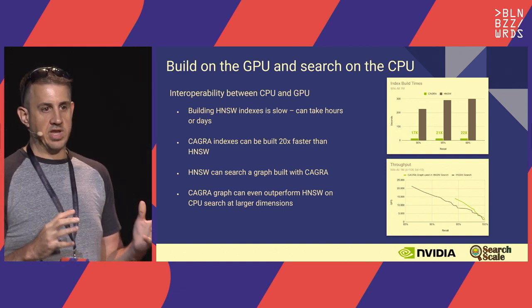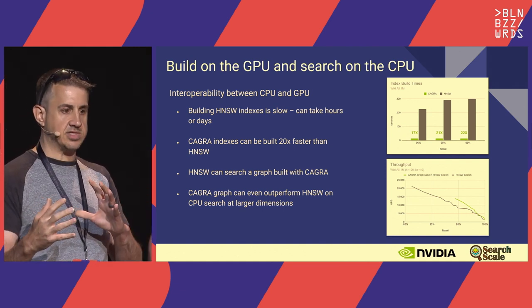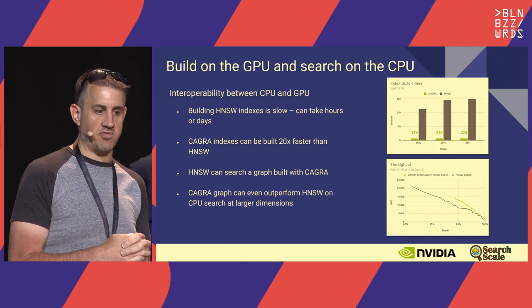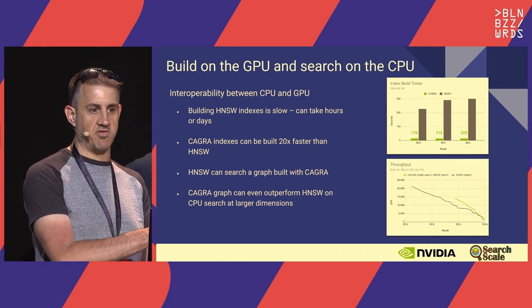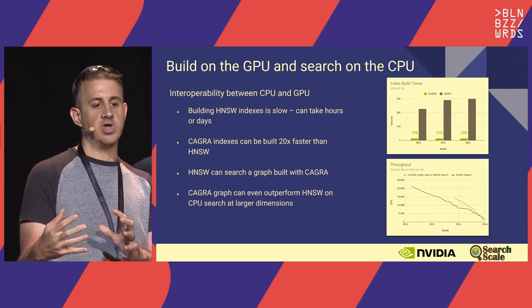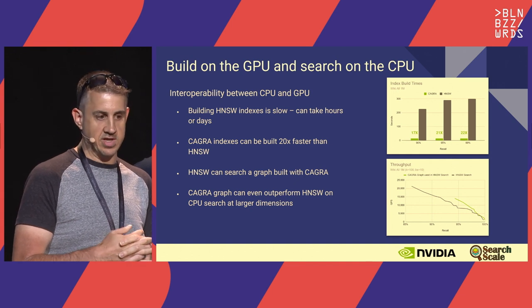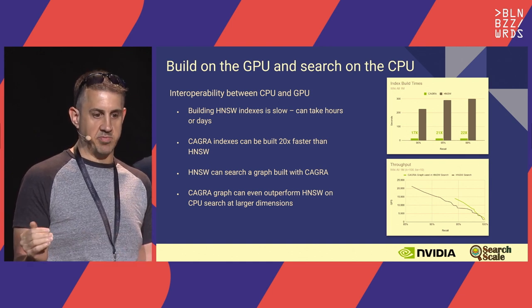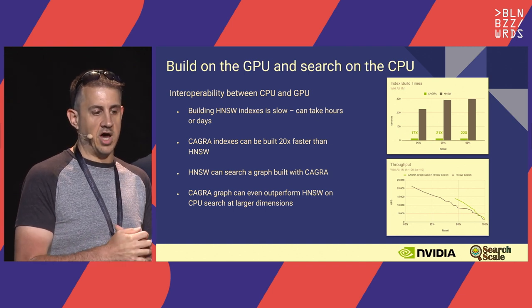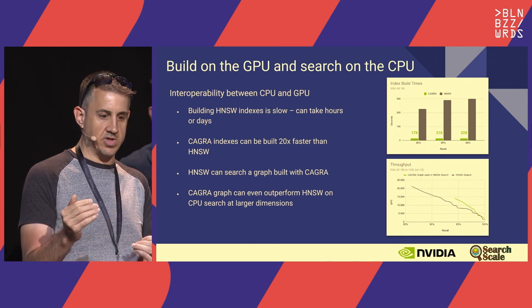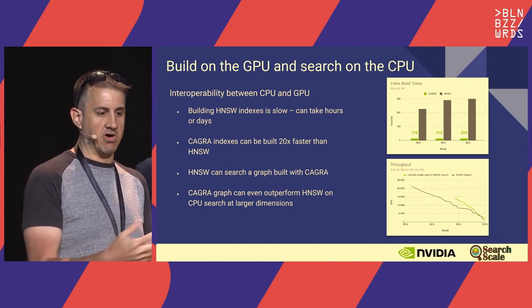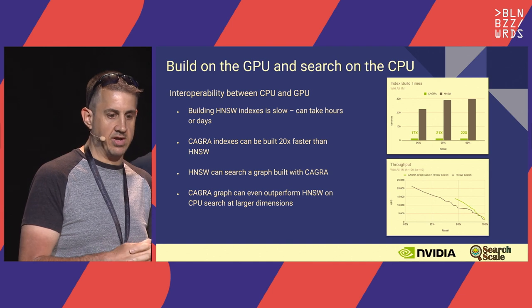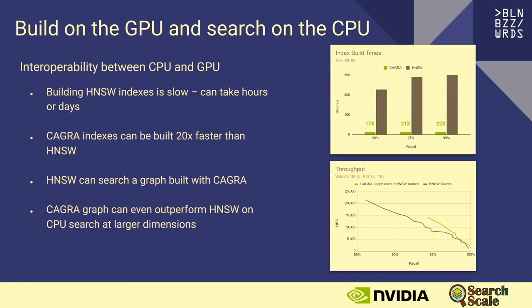Because there's been so much interest in index building on the GPU, and because so many people with vector search deployments are using HNSW on the CPU, it was a natural fit to expand our capabilities so we can convert a CAGRA graph into an HNSW graph—build on the GPU, then convert to the CPU for deployment. We're finding that in larger dimensions, the hierarchical layer of HNSW actually starts to hinder performance. So when we convert the CAGRA graph into an HNSW graph, the navigability is excellent, and we're seeing better search performance than searching a natively built HNSW graph.